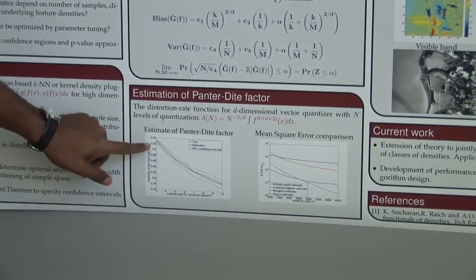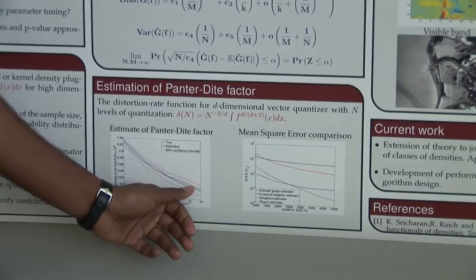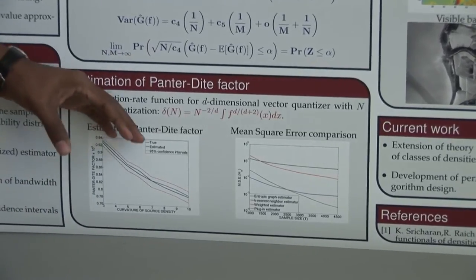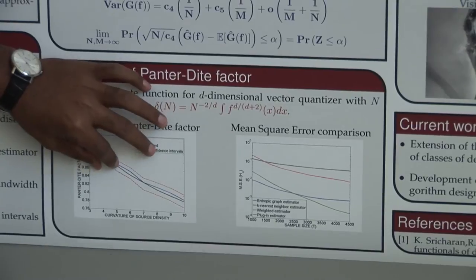On the left panel, I have the true Panter-Dite factor in green and the estimated Panter-Dite factor in blue. As you can see, the estimate is very close to the true value. I also specify analytic confidence intervals on this quantity.